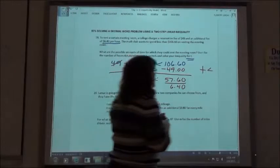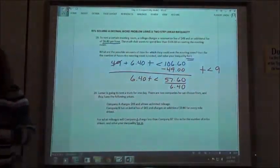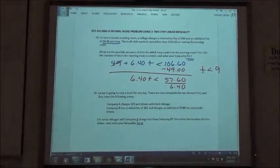T is going to be less than nine. Now, that means if they rent the hall for less than nine hours, they're going to stay within their budget. If they go over nine hours, then they're going to spend too much.